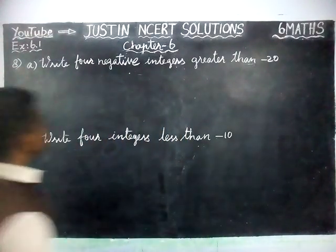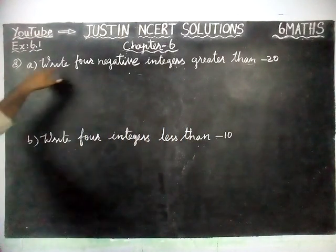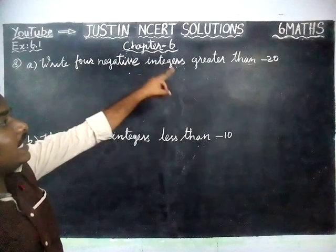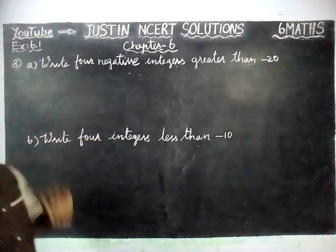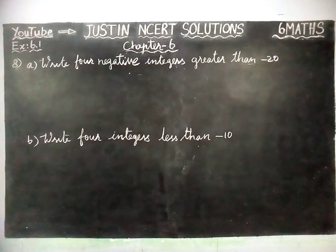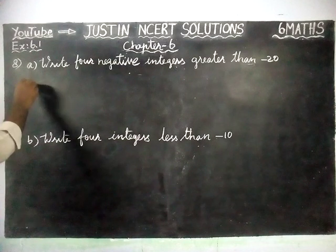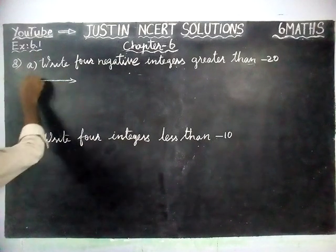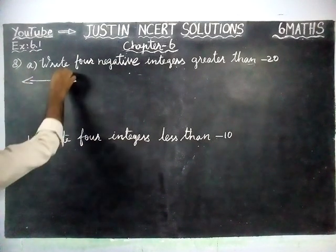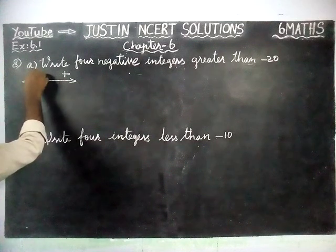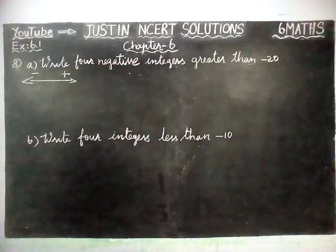The question is: write 4 negative integers greater than minus 20. When we are moving on the number line, if we are moving right hand side, value will increase. When we are moving left hand side, value will decrease.